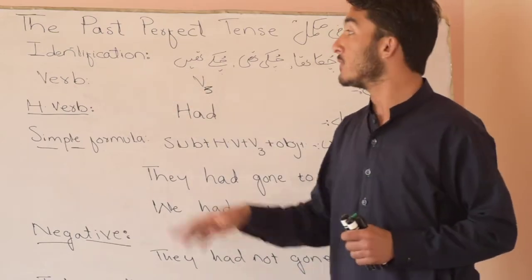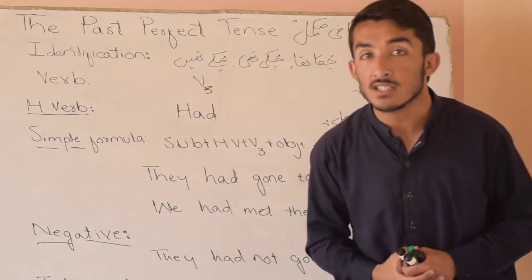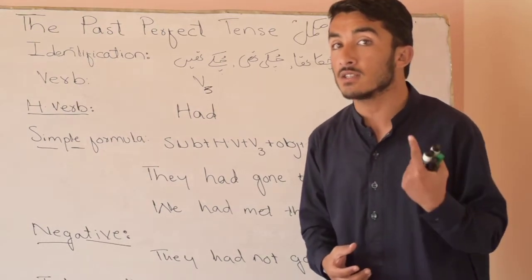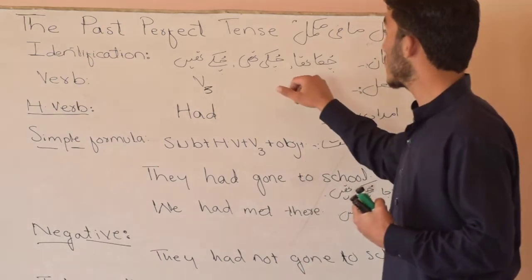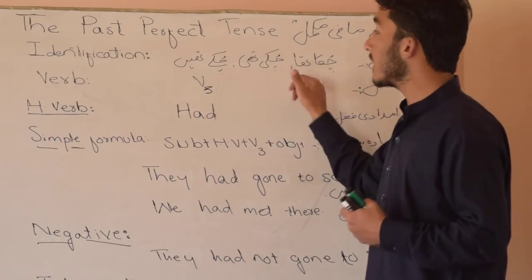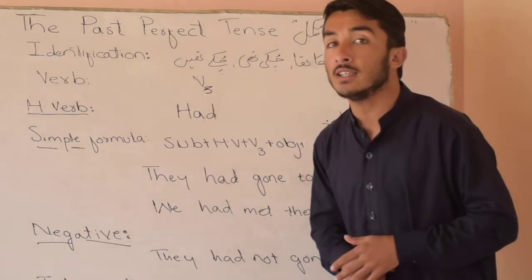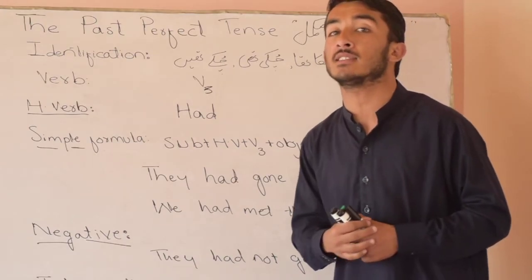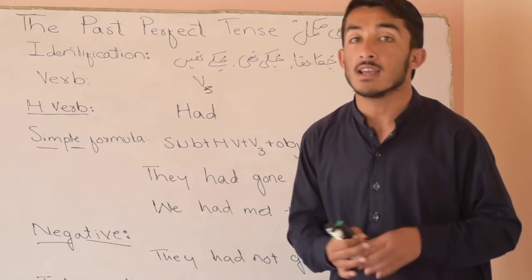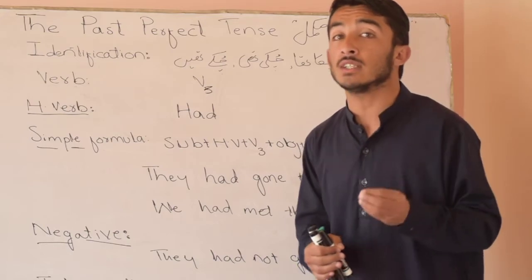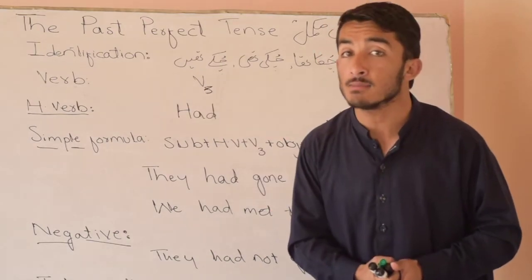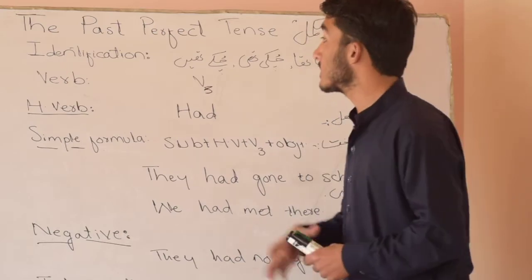So we have four major points. The first major point is identification — pehchan. Yaad rakhna hai: jab bhi kisi Urdu jumle ke aakhir mein 'chuka', 'chuki', ya 'chuke' aaye, iska matlab that sentence belongs to past perfect tense. Keep in mind: if any Urdu sentence ends with any of these words, that sentence belongs to past perfect tense.